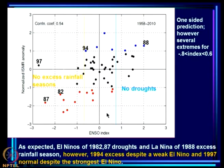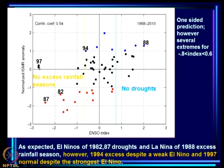The El Niños of 1982 and 1987 produced droughts; the La Niña of 1988 produced excess. But we want to understand 1994, an excess despite unfavorable ENSO, and 1997, a normal year despite the strongest El Niño. We focus on extremes because it is most important to predict the extremes of monsoon rainfall — much more so than fluctuations within the normal range.